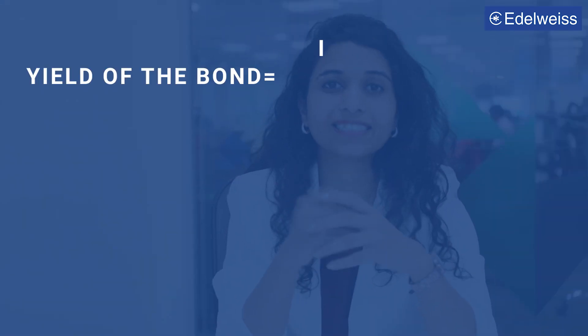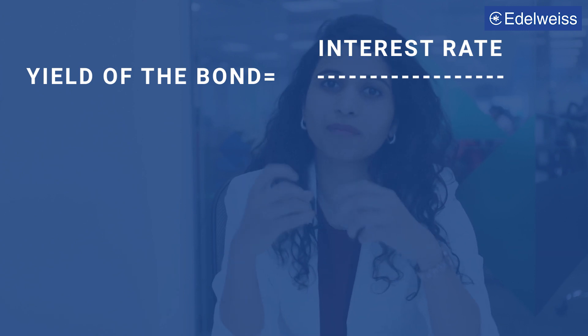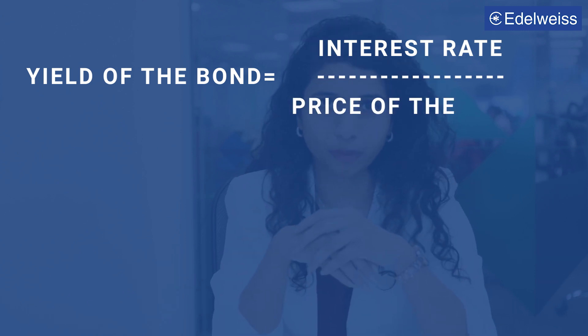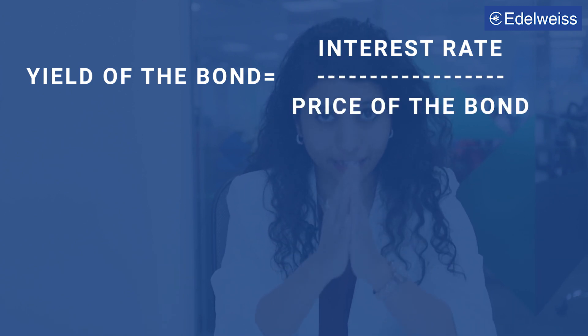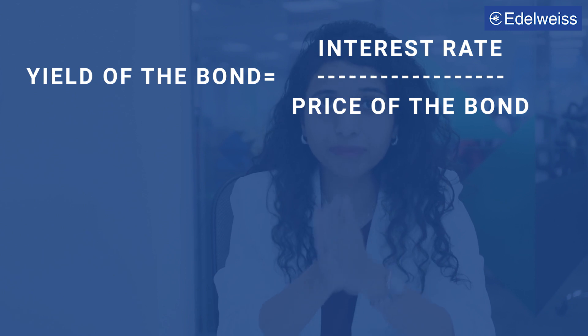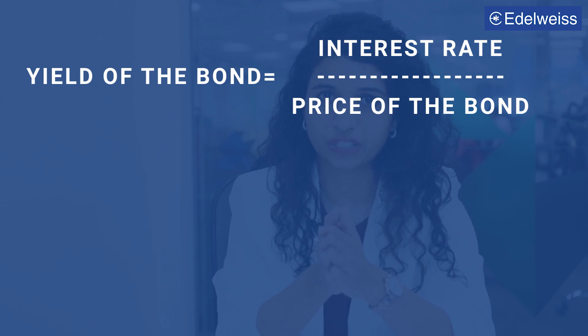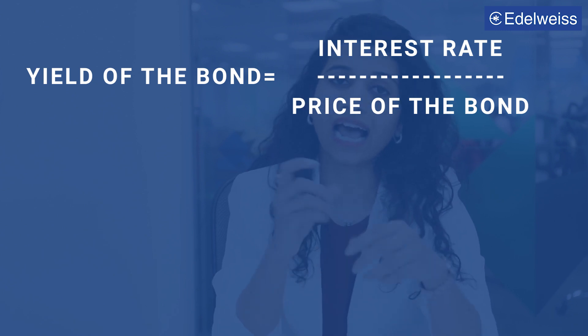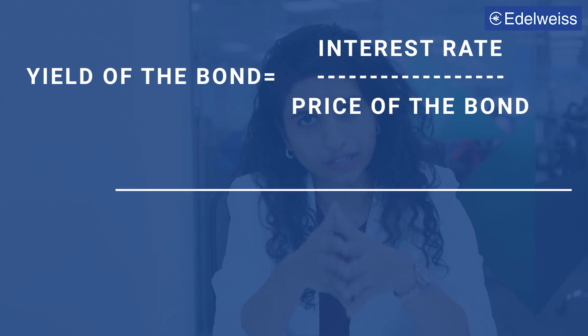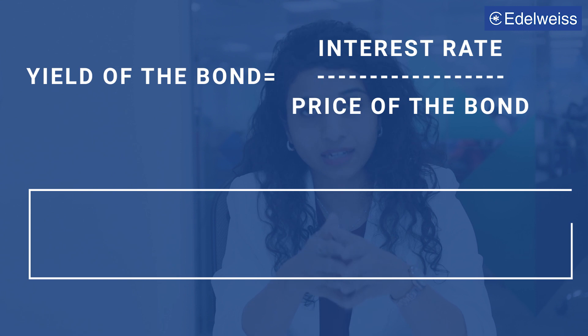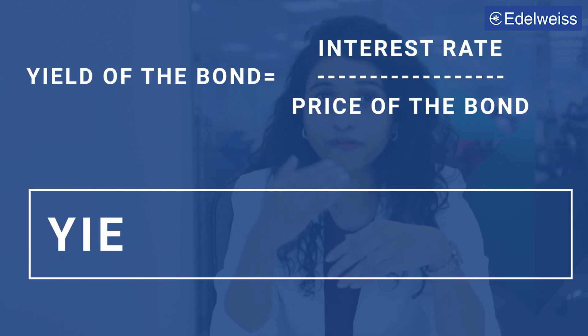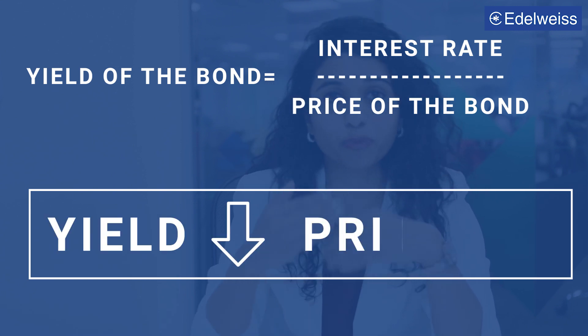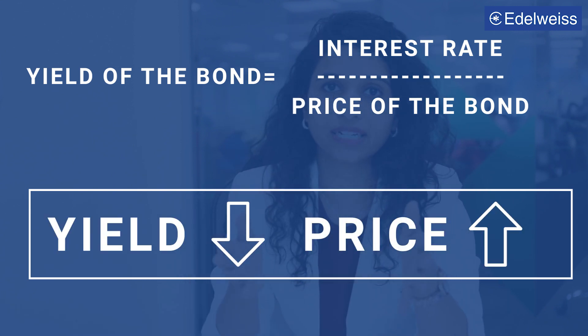Now, the yield of the bond is the interest rate divided by the price of the bond. Therefore, the yield is directly proportional to the interest rates and inversely proportional to the price of a bond. When yield falls, the price rises, and this creates a scope of making capital gains on the bond.